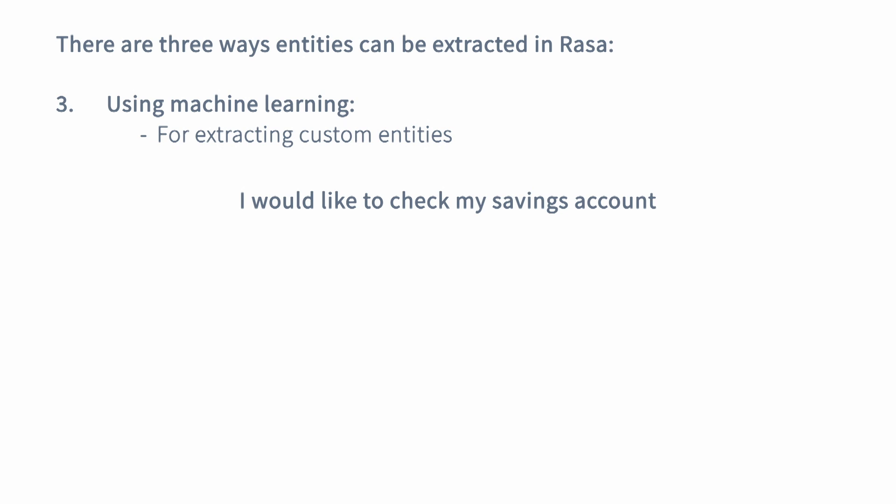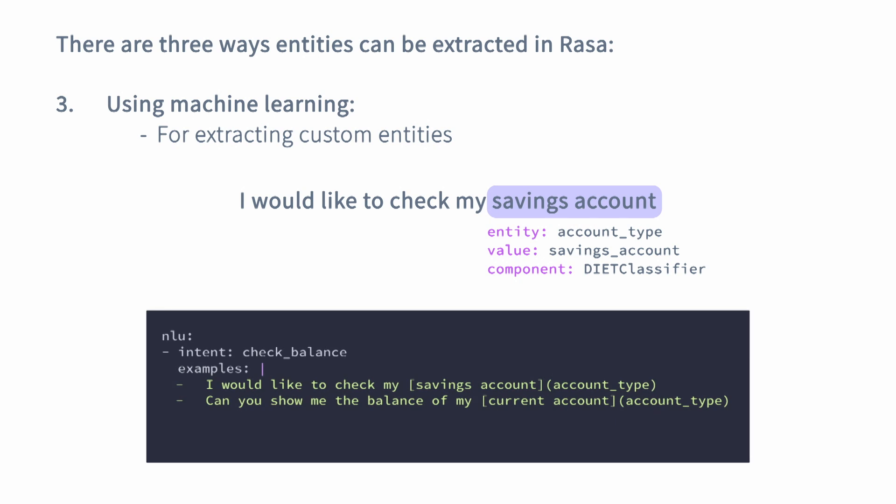Rasa comes with a few machine learning models that you can use and train on your own training data. For example, one of the most powerful models for entity extraction is Rasa's DIET classifier. When extracting entities using machine learning models, there are lots of things happening under the hood and quite a few things you have to take into account when building those models. We will talk about this topic a lot more in the later episodes when we dive deeper into the NLU model pipeline configurations.